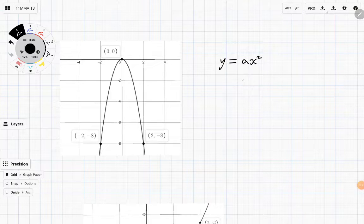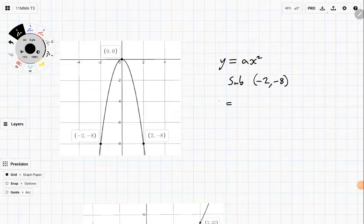To work out a, we just need to sub in a point. In this case, let's sub in (-2, -8). I could have chosen (2, -8). I can't choose the origin, but I can choose any other point. So -8 = a × (-2)², making sure you're putting the negative in brackets. We get -8 = 4a.